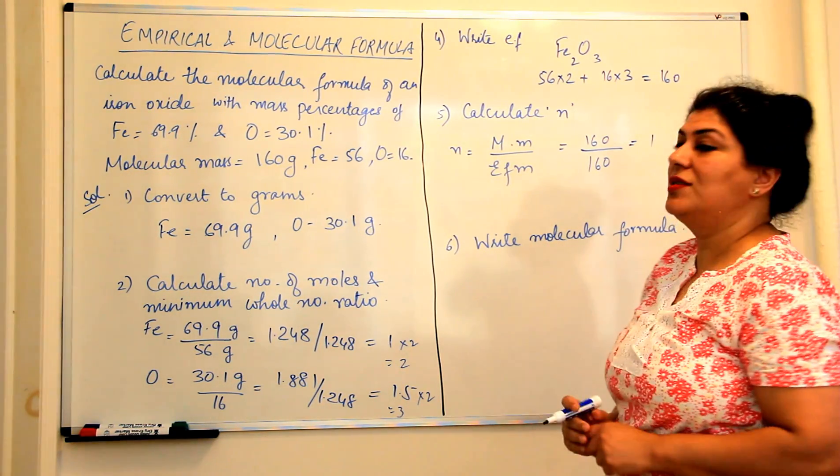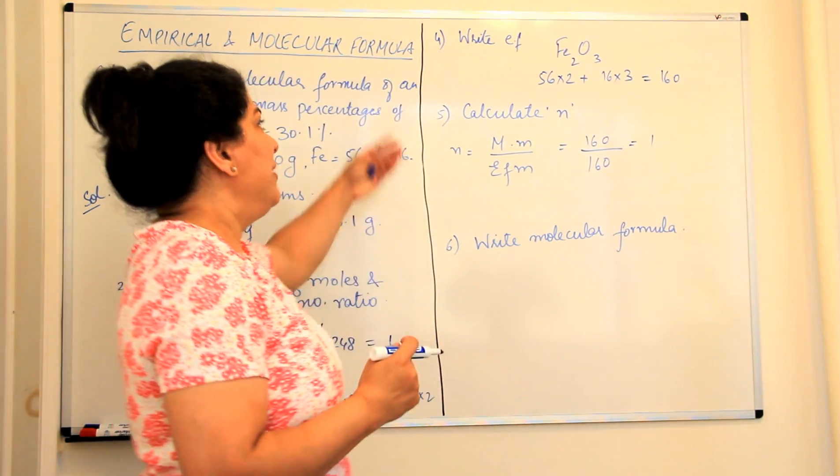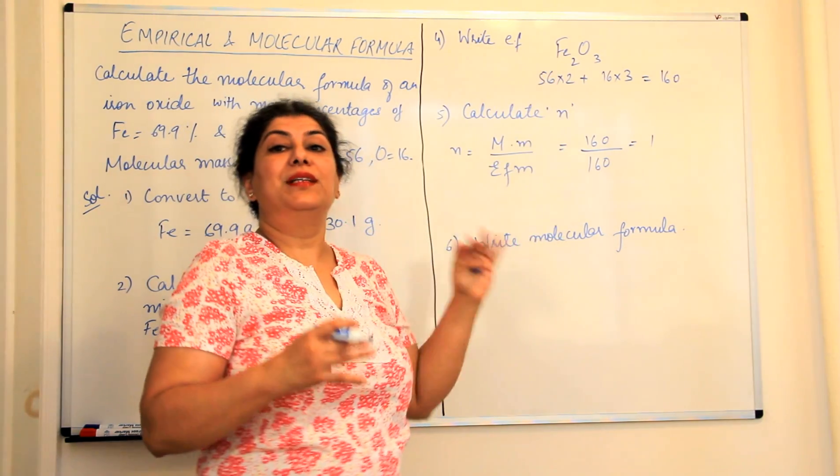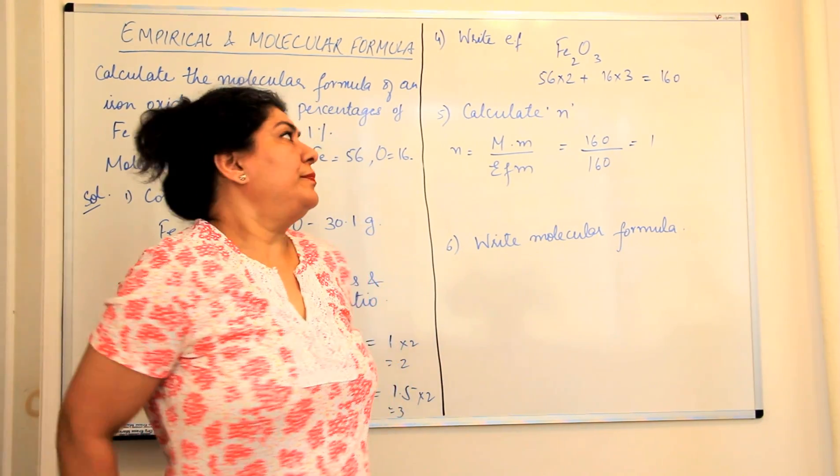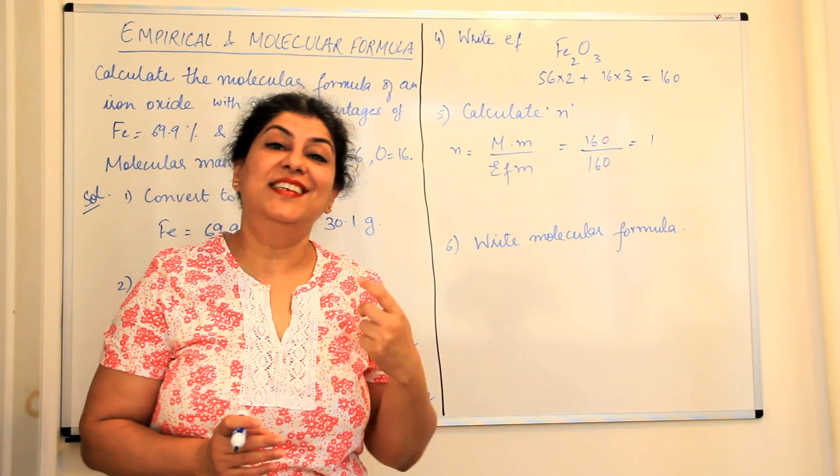If they are the same, the answer, the value of N is 1. If N is 1, we have to multiply the empirical formula by the value of N. Since N is 1, the molecular formula and the empirical formula for this compound are the same.